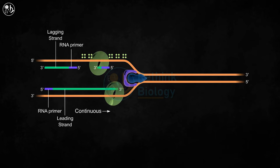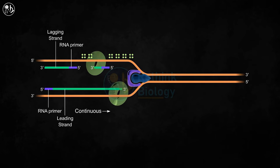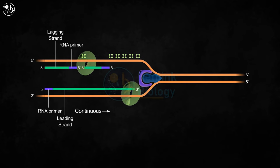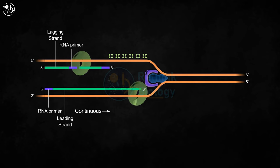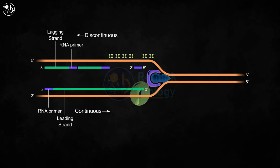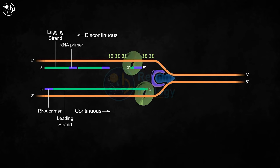Since replication can only run in the five prime to three prime direction, to continue DNA replication on the lagging strand template, a new RNA primer is synthesized near the replication fork by DNA primase and then it is elongated by DNA polymerase III in the opposite direction to the fork movement, producing the next Okazaki fragment. Thus, the synthesis of the lagging strand is discontinuous, and the Okazaki fragments have gaps between them.